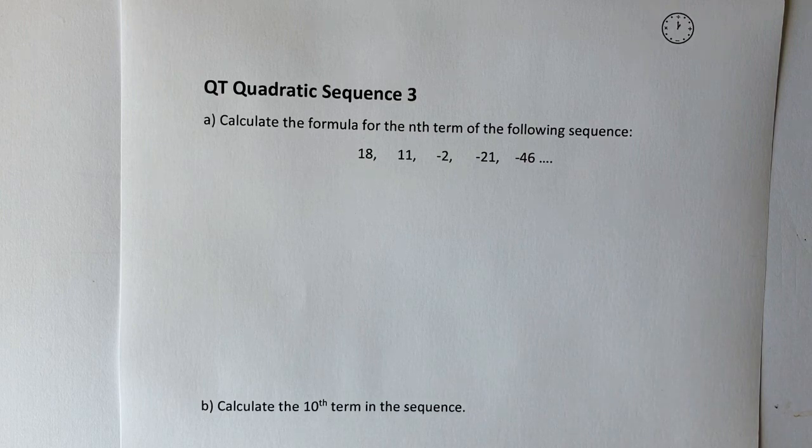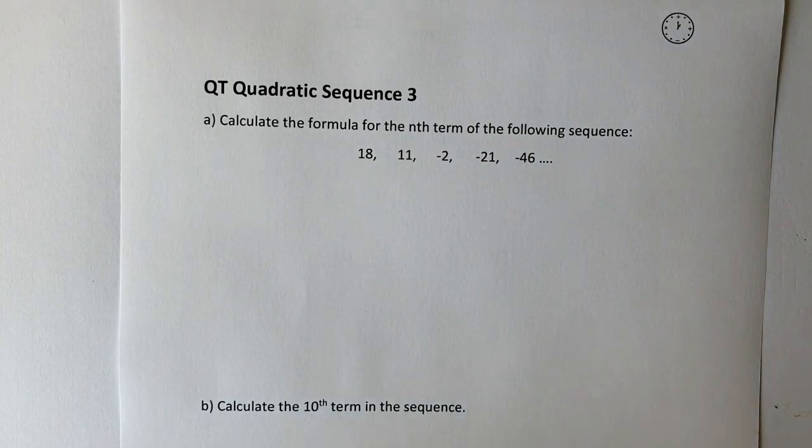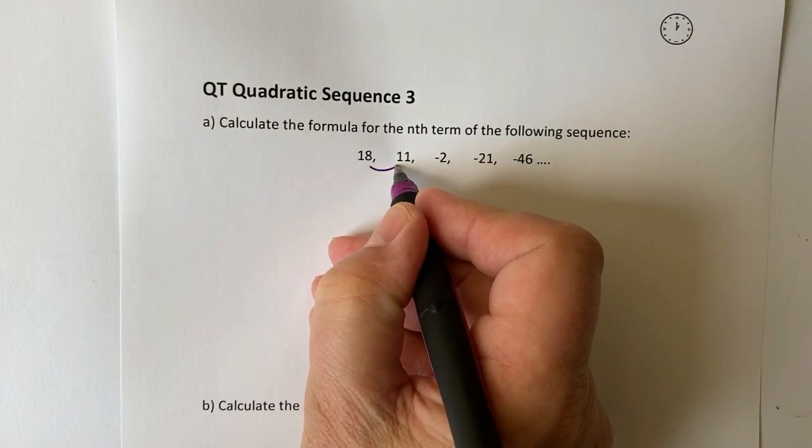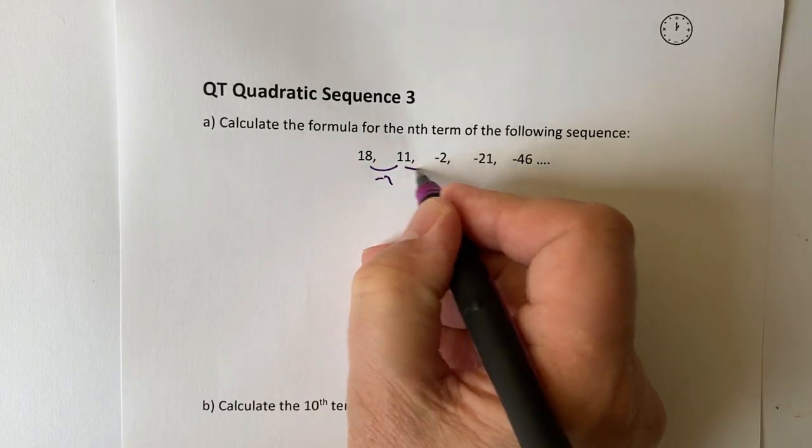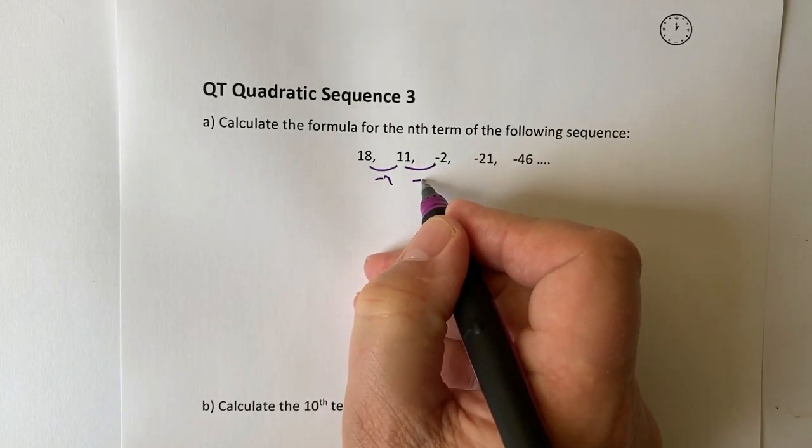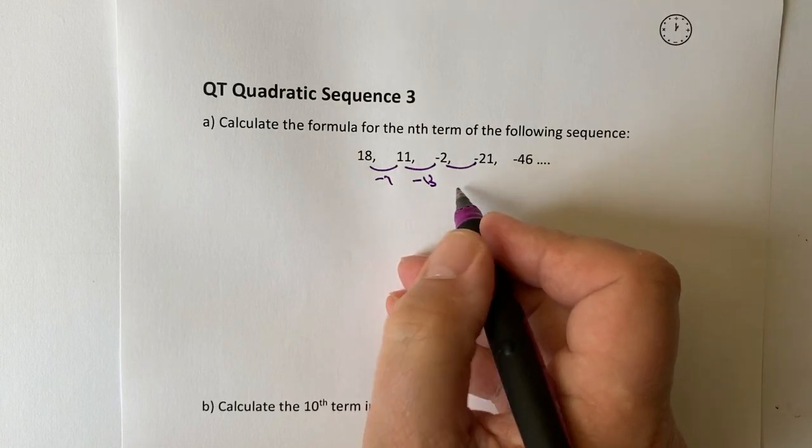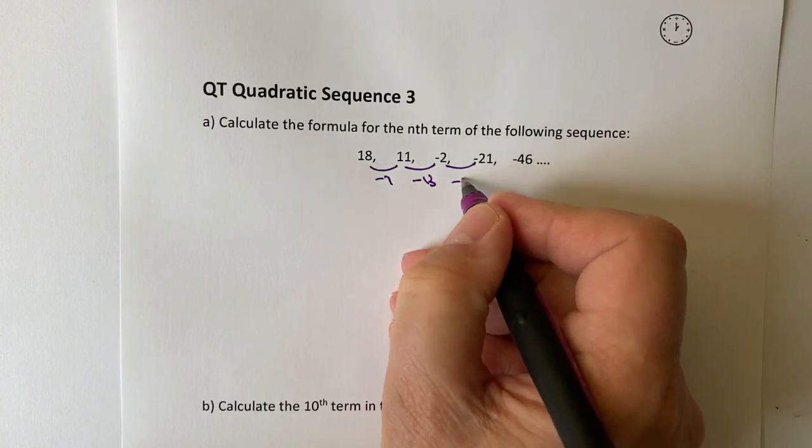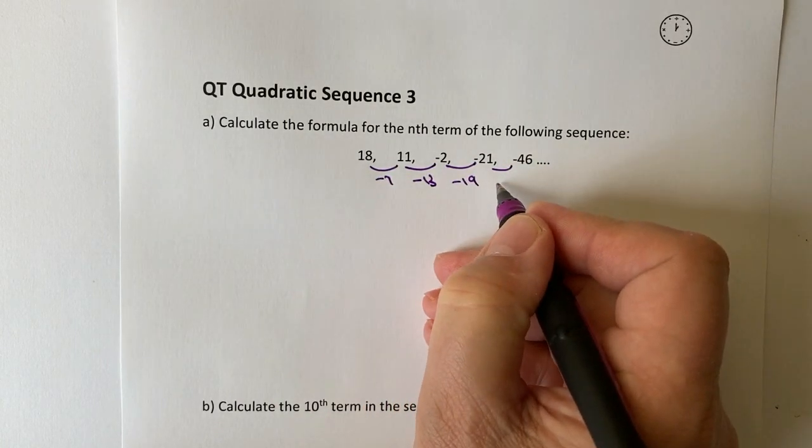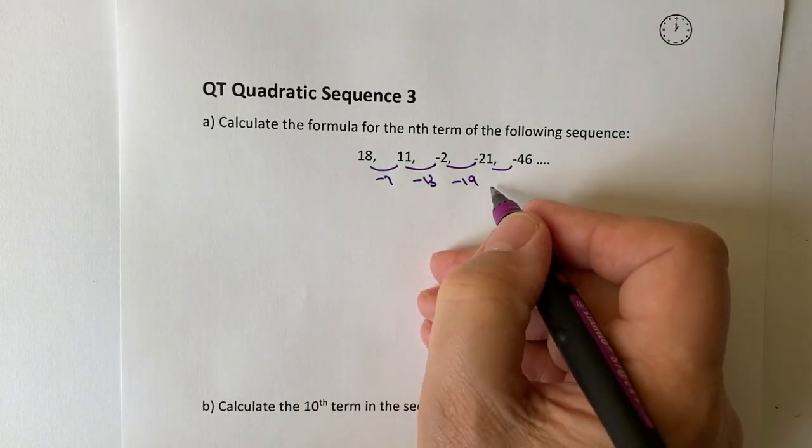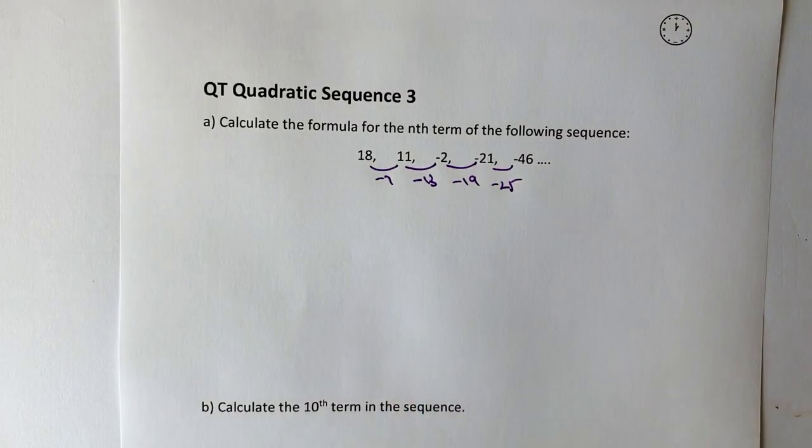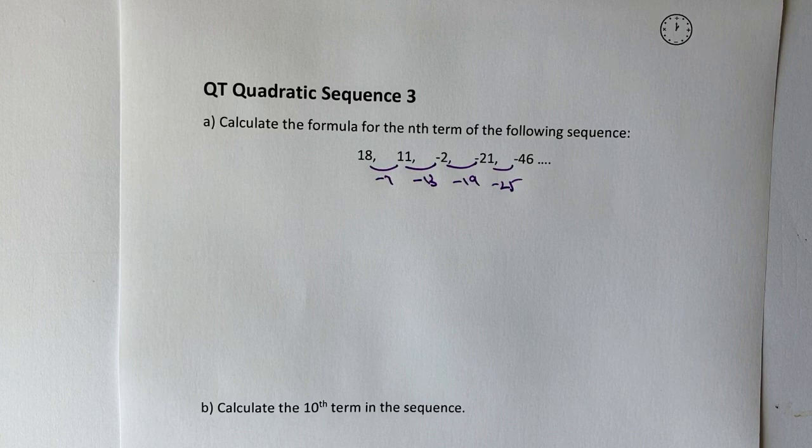However, we are going to be able to spot that because if we look at the difference between the first term, or the first level differences, we're going to get these different numbers which are not the same. So therefore if it's not the same, it's not an arithmetic difference, so what we've got to do with this is treat it as a quadratic.